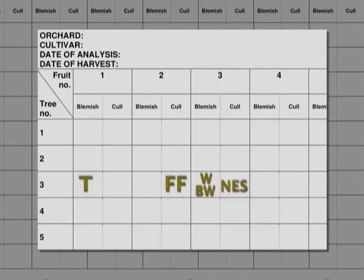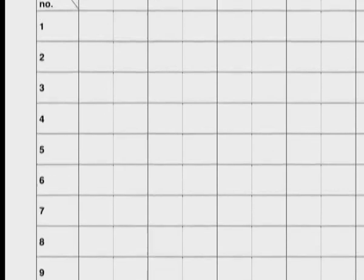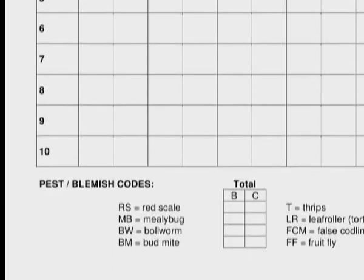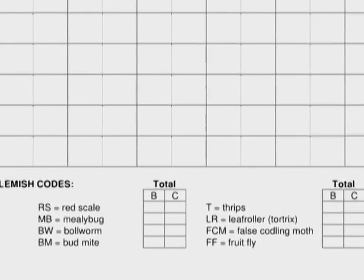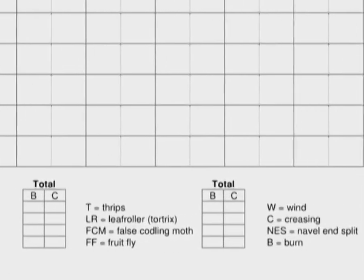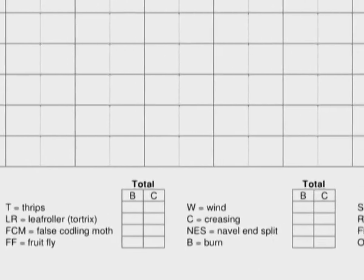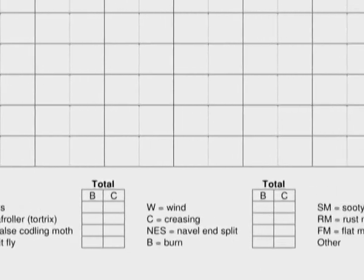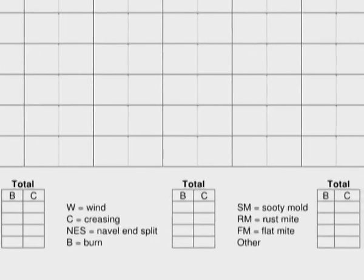If there is no damage to a fruit, a dash or line through the block is used as an indication. Once all the blocks have been completed, the numbers of blemishes and cull factors are added up and entered into the blocks at the bottom of the form. This information can be entered into a summary sheet along with information from other orchards, where it can be analysed further.